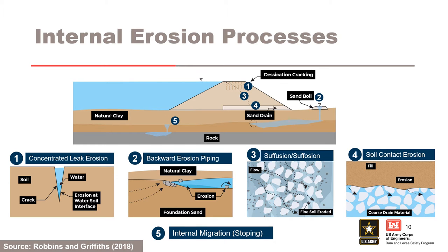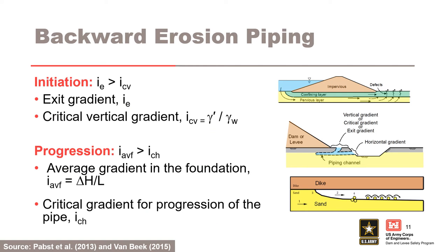Direct use of critical velocities or gradients determined from laboratory experiments is limited by the narrow range of materials tested and an apparent significant scale effect. For backward erosion piping, initiation is governed by Terzaghi's classical equation for critical vertical gradient, whereas the average gradient informs the hydraulic condition for progression.